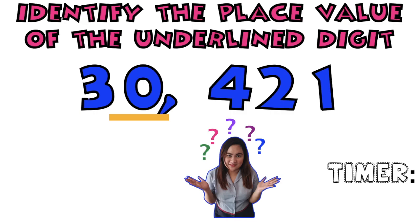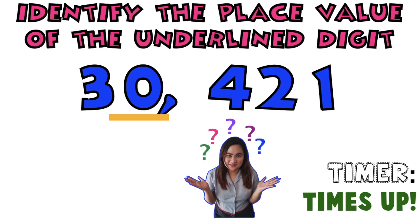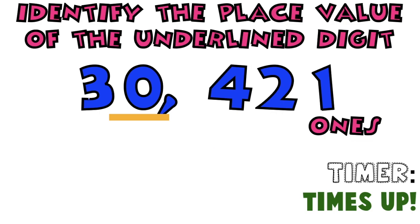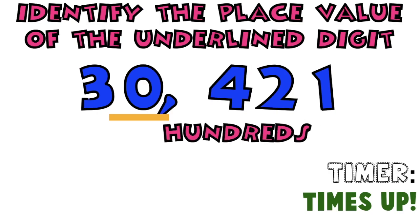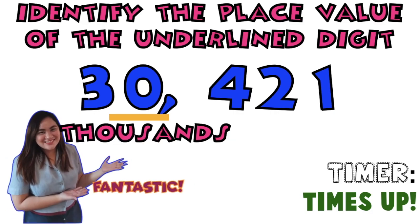Time's up! Let's see if your answer is correct. Digit 1 is ones. Digit 2 is tens. Digit 4 is hundreds. How about digit 0? I can't hear you. What is the place value of digit 0? Fantastic! That is thousands.